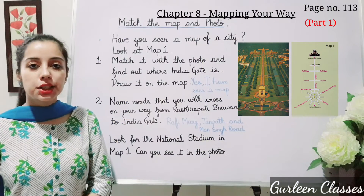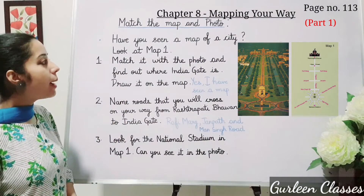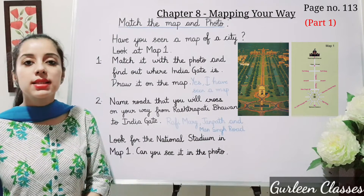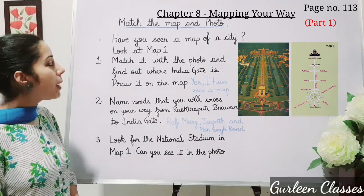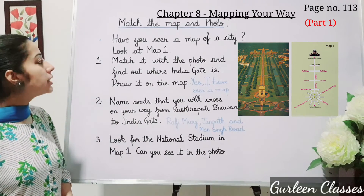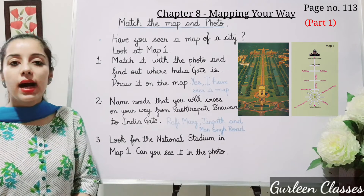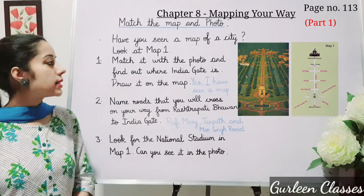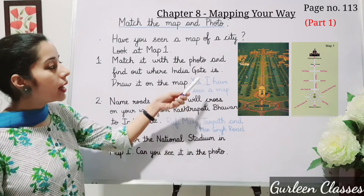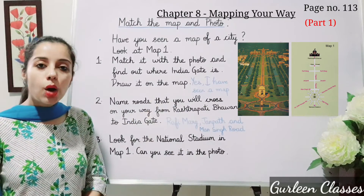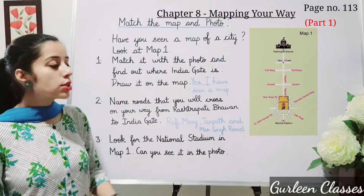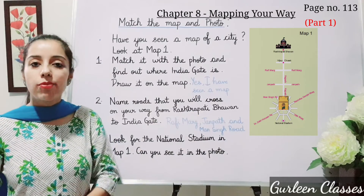Now let us see the questions. Have you seen a map of a city? Yes, I have seen a map of a city. Look at Map 1 — match it with the photo and find out where India Gate is, then draw it on the map. So students, see on the photo — here is India Gate. Now we have to draw India Gate on Map 1. Here you can see I have drawn India Gate on Map 1.